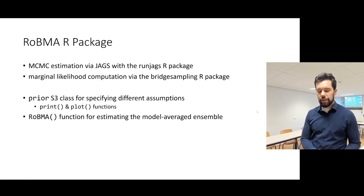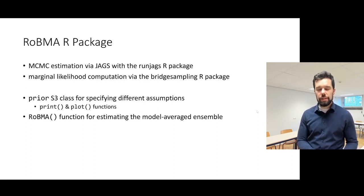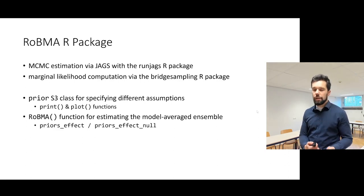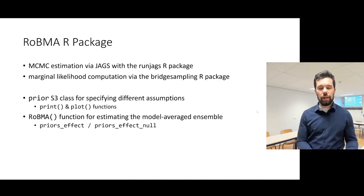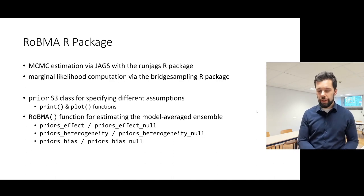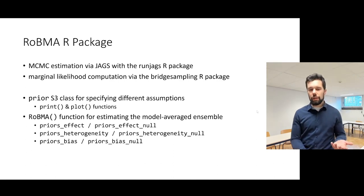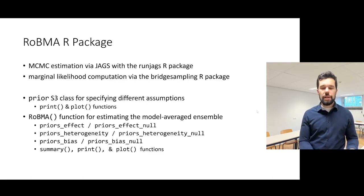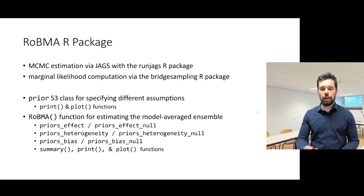To specify different hypotheses about the presence or absence of the effect, heterogeneity, and publication bias, we can use the priors_effect and priors_effect_null arguments, and similarly for heterogeneity and publication bias. The resulting fitted robma object can then be further interrogated with summary, print, and plot functions, which I will now illustrate with examples of the output.